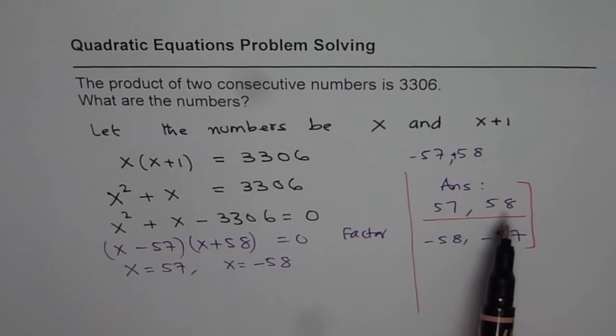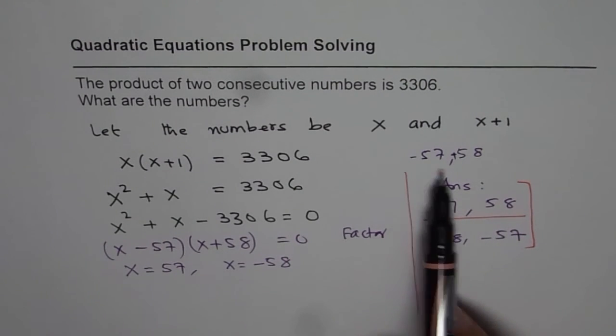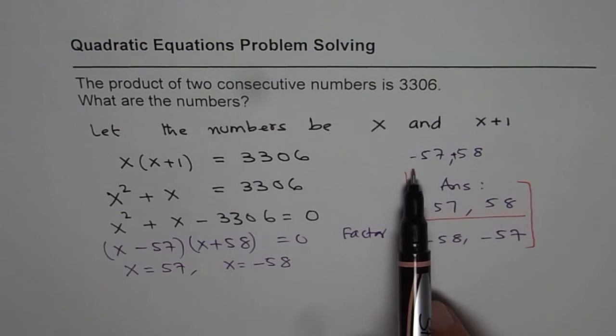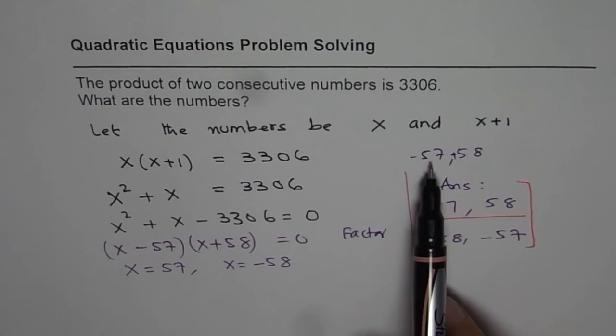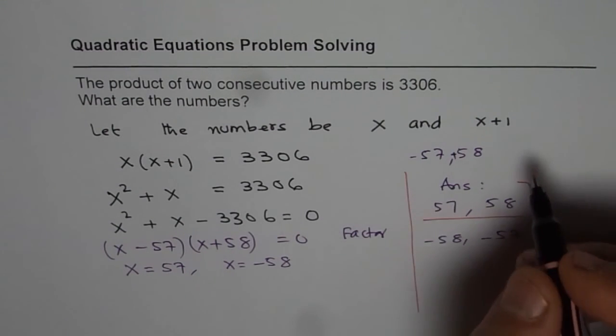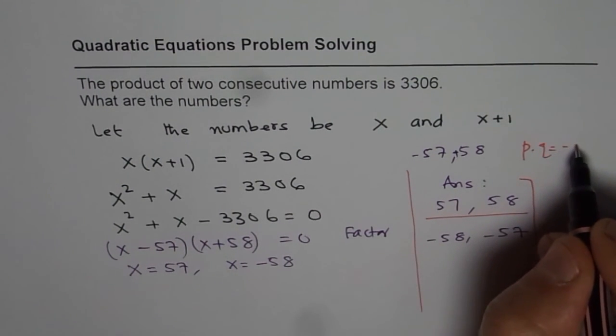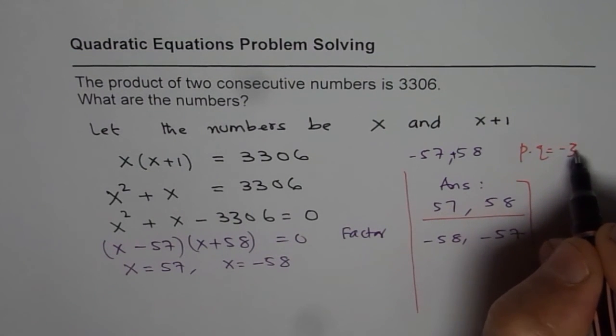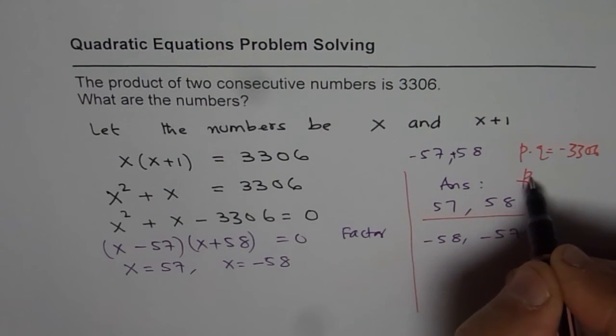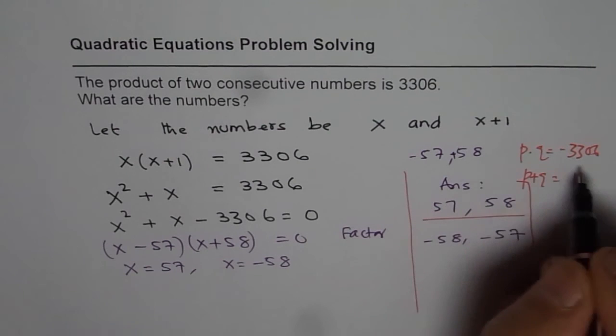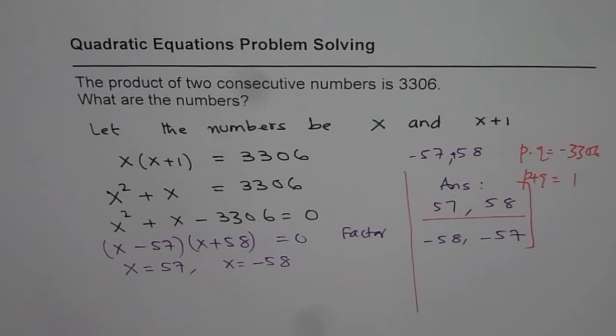Now, those of you for whom we just factored using this technique, that gave us a hint that which two numbers to take so that we get product as equal to 3306 with a negative sign. And sum as 1. So that's a good technique, just to square root and then do it.